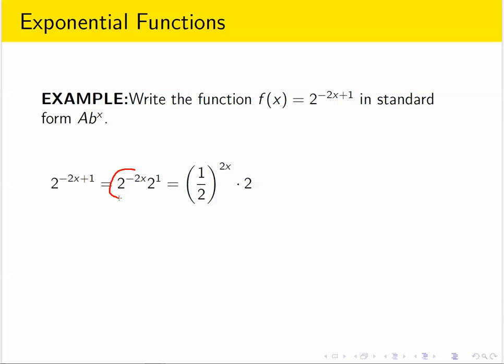Now the negative two x we can think of as a reciprocal. So that's how this two became a one half and we got rid of, notice there's no minus sign there, because we took the reciprocal of the two. And we did one more thing to simplify, two raised to the one is just two.